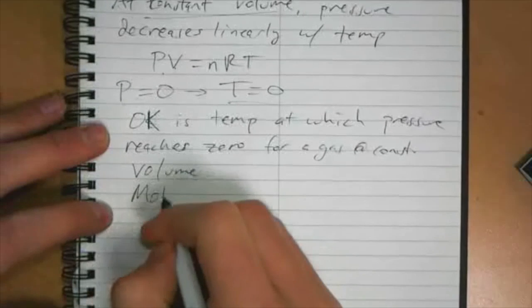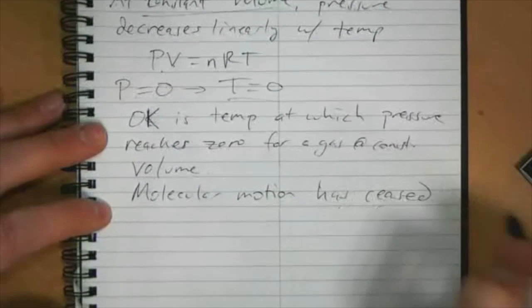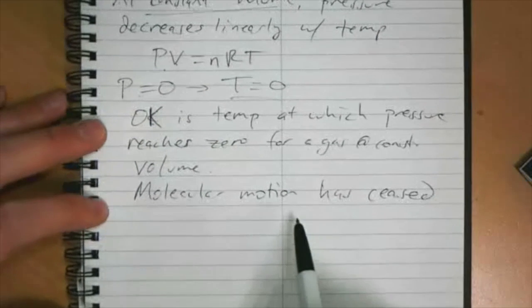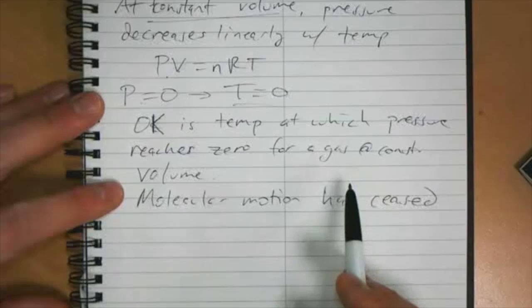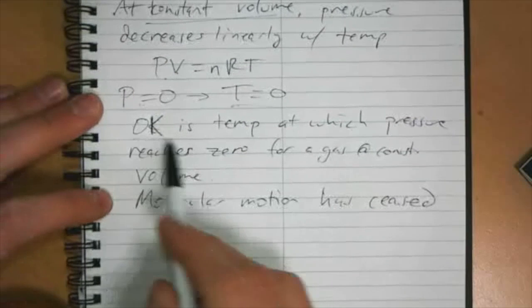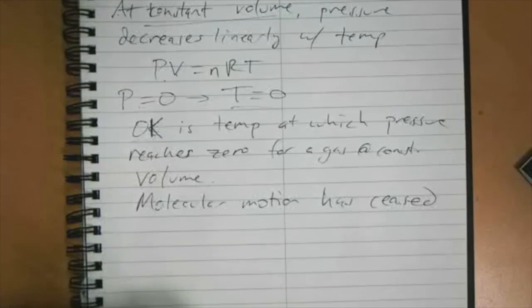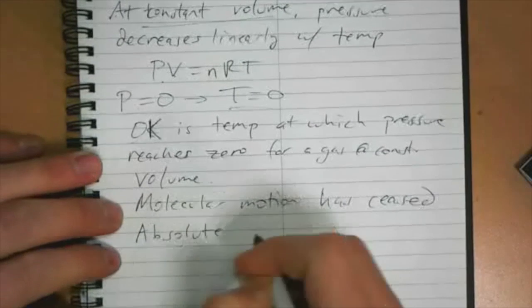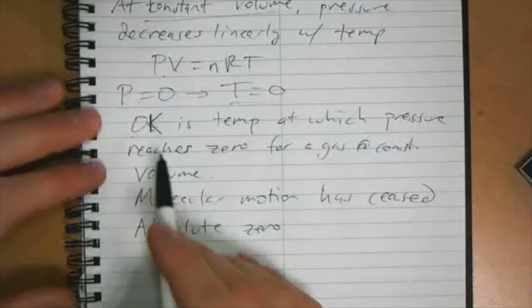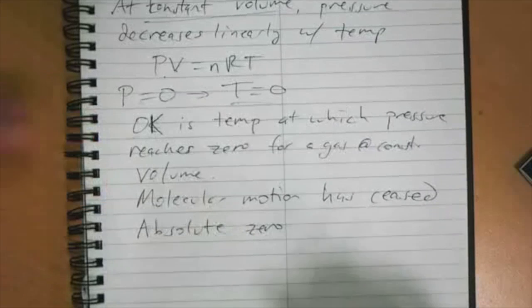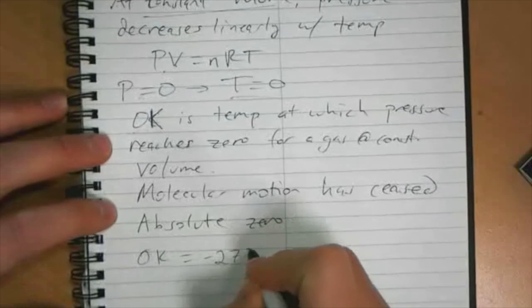At zero Kelvin, molecular motion has ceased completely. In labs, they have gotten temperatures to very small fractions of a Kelvin. But no one has created zero degrees Kelvin. No one has gotten a temperature that low. It's often called absolute zero, a term you might hear. But no one has ever achieved it. This zero Kelvin, being the point where molecular motion ceases, defines the Kelvin scale. Zero Kelvin is minus 273.15 degrees Celsius.